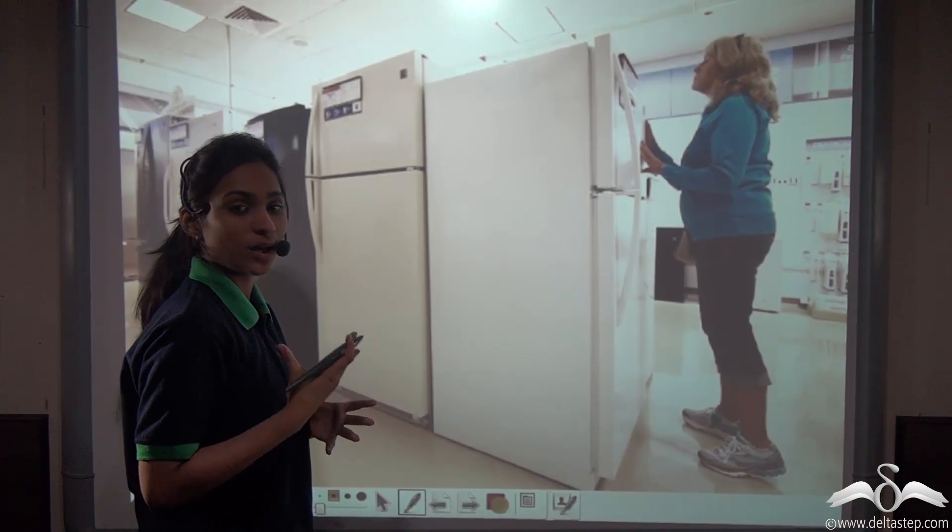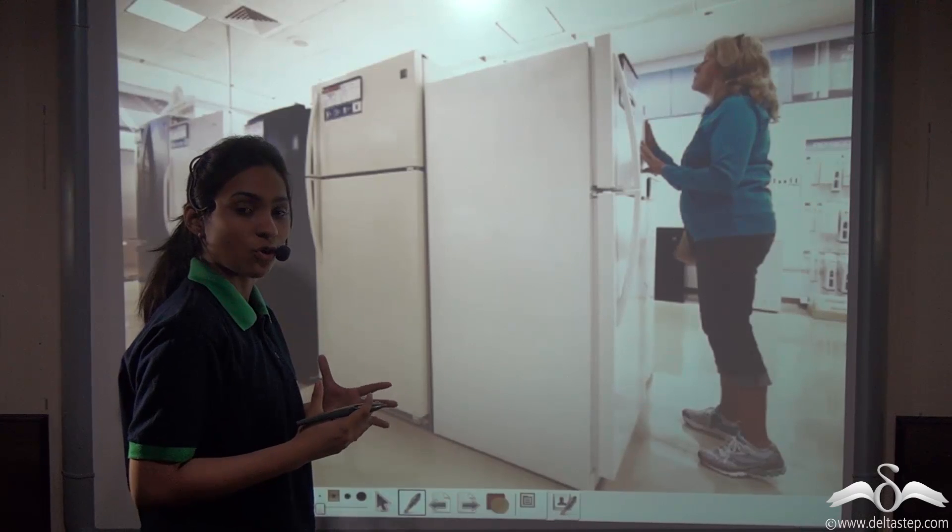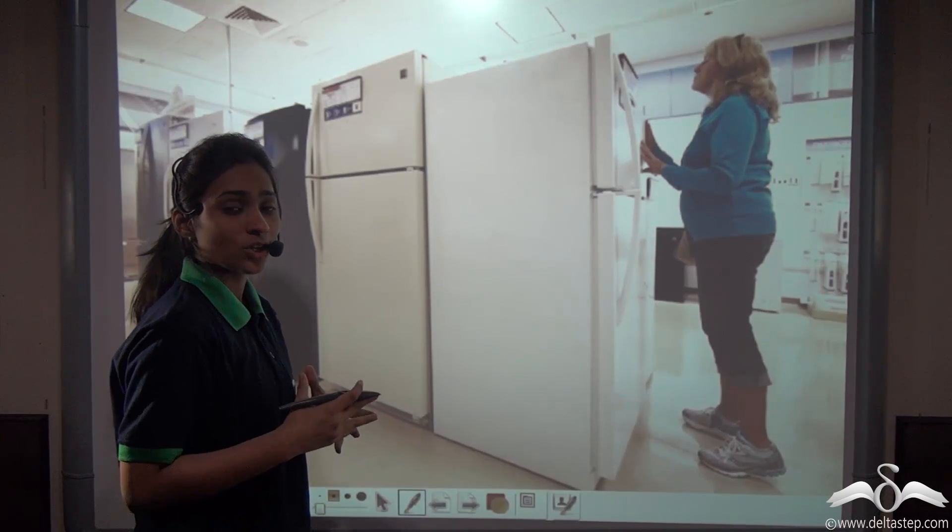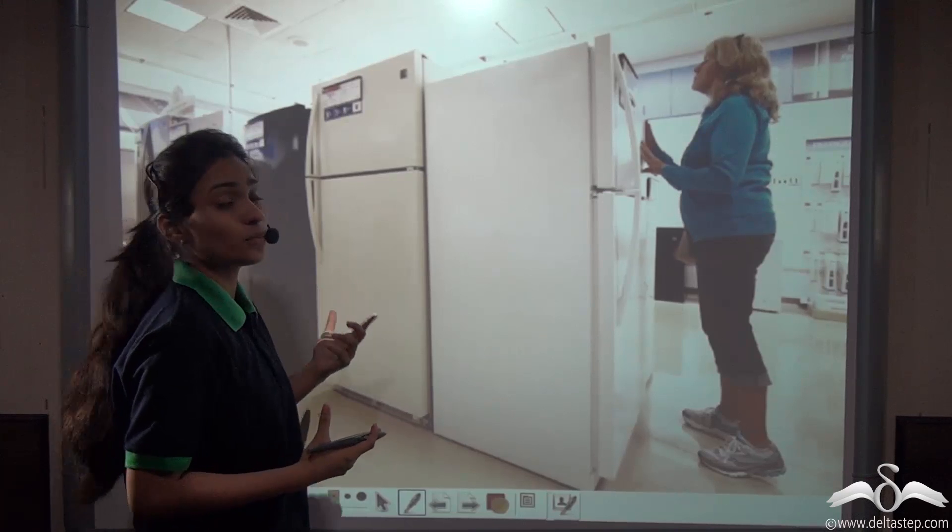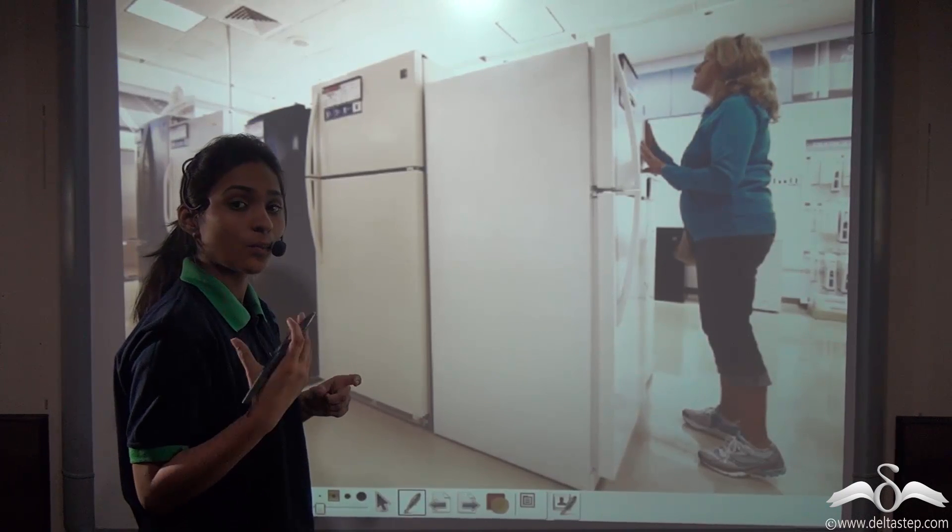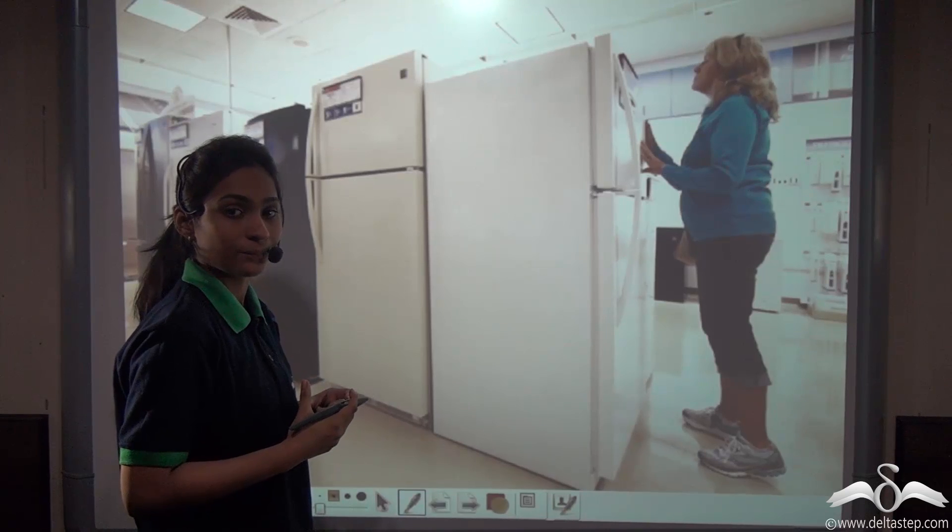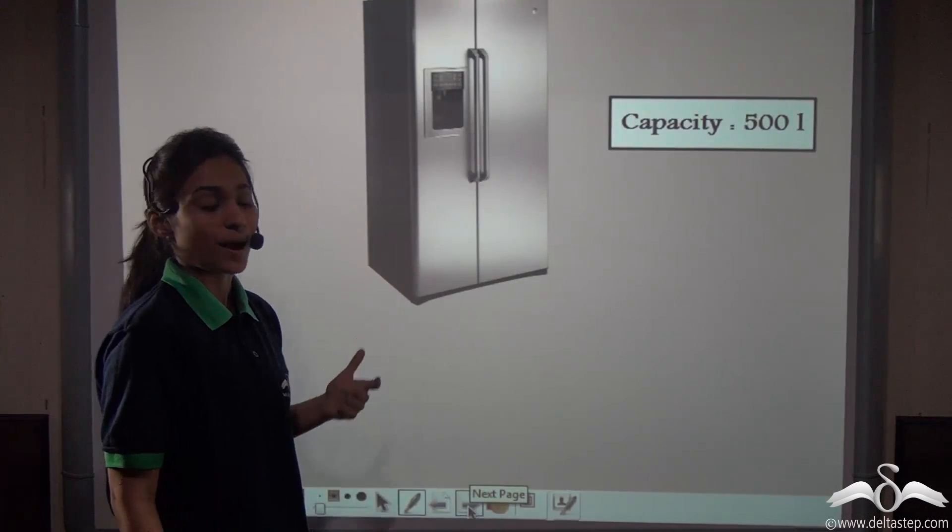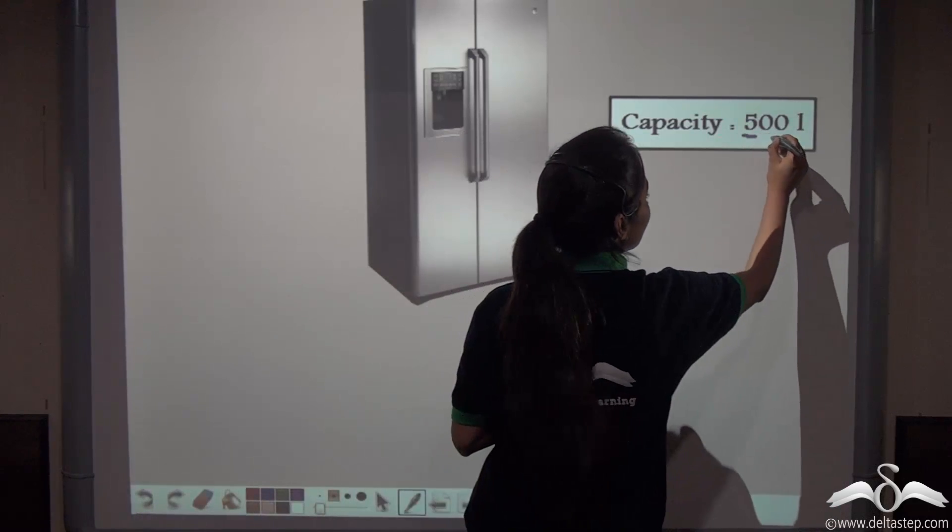One day Rhea went with her mother to the electronics store to buy a refrigerator for their home. She noticed that her mother was looking at the capacity of the fridges to decide which refrigerator to buy. The refrigerator they bought had the capacity of 500 litres.